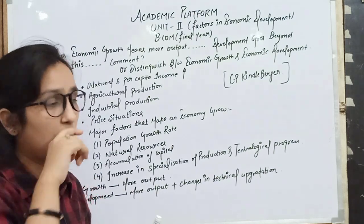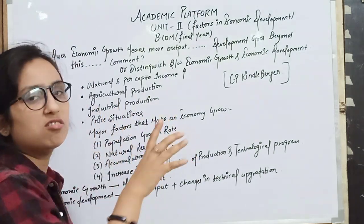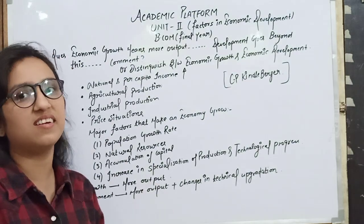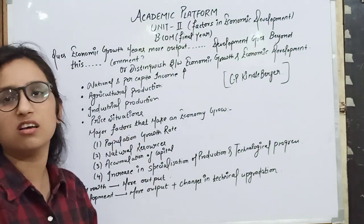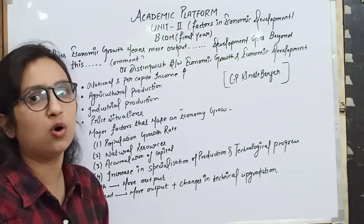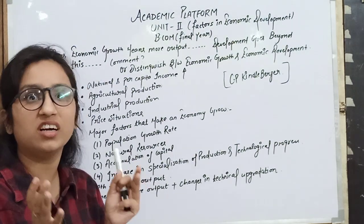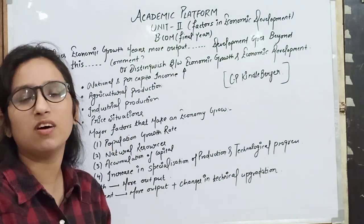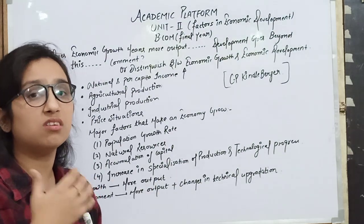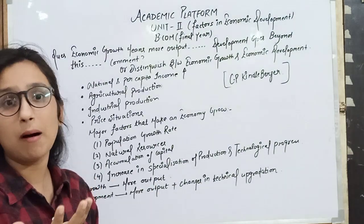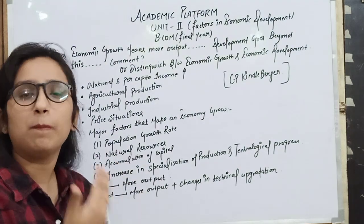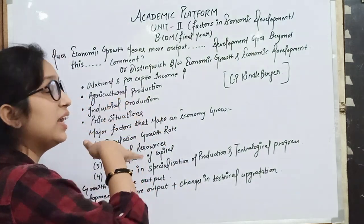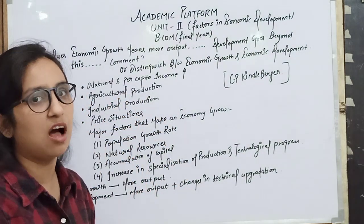There was a lot of increase in agricultural production. Similarly, when we talk about industrial production from our secondary sector, it also had a positive impact. The economic policy introduced in July 1991 — LPG — was discussed in Part 1. Because of LPG, there were a lot of outstanding results and a lot of growth in our industrial sector.